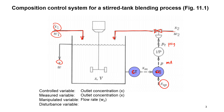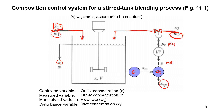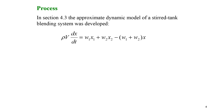The thing that we can manipulate is W2 — that's the flow rate of stream 2 coming in with our valve. A disturbance variable in this case would be X1, although we could have W1 or X2 as well. For simplicity, we'll assume that the volume of the reactor, W1, and X2 are constant.